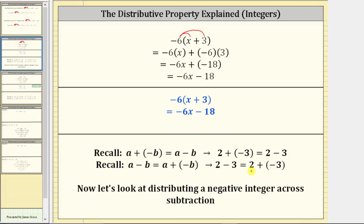Simplifying, negative six times X is negative six X, and negative six times three is negative 18, giving us negative six X plus negative 18. But we normally don't leave it in this form, because adding a negative is equivalent to subtracting a positive. We would normally give the final expression as negative six X minus 18. We can think of this in a slightly different way: negative six times positive three is negative 18, so because the product is negative, we have minus 18. If the product is negative, we have subtraction; if the product is positive, we have addition.